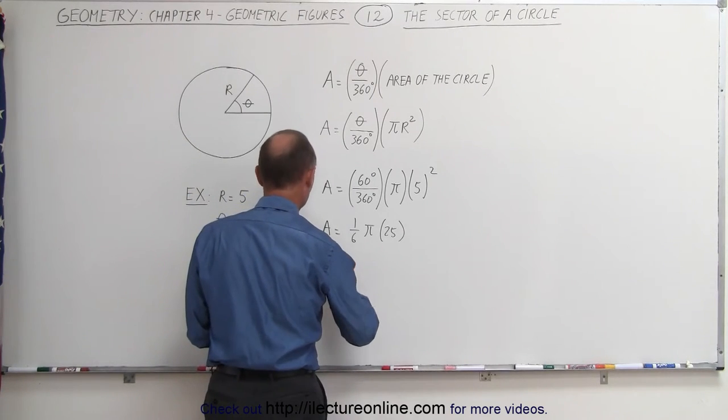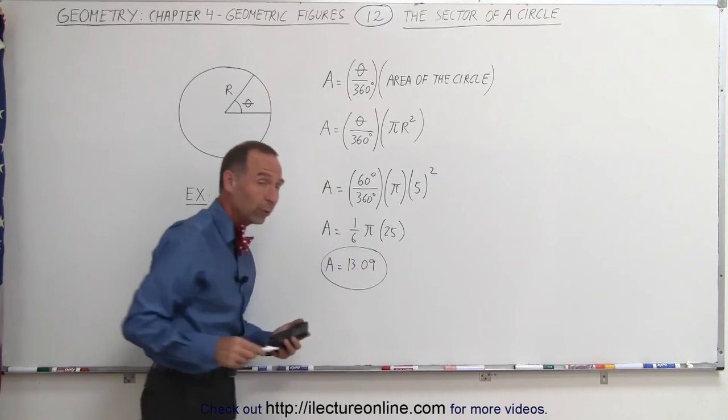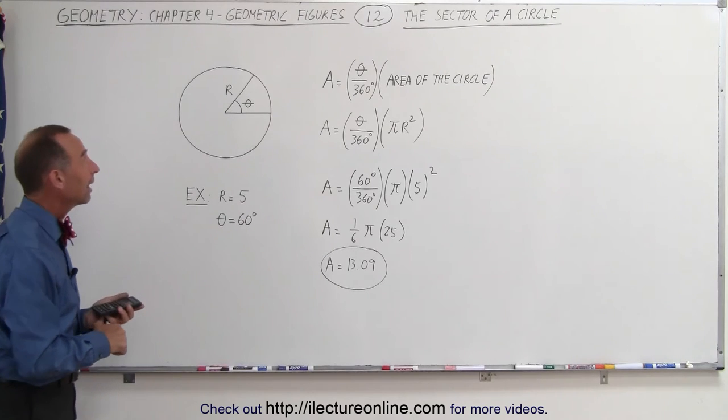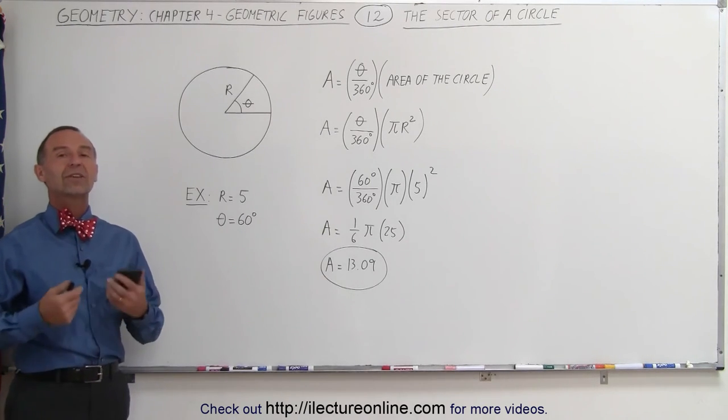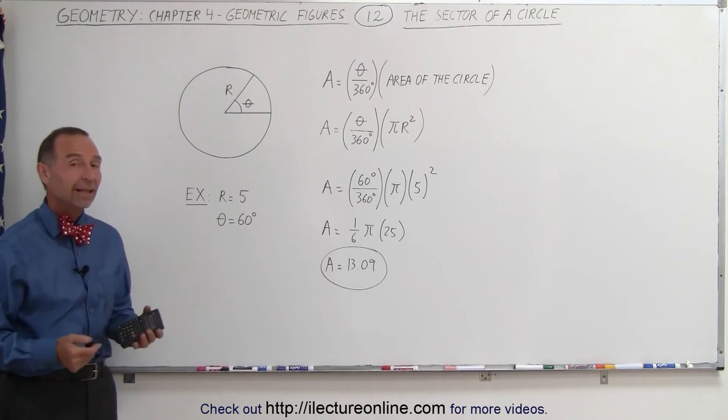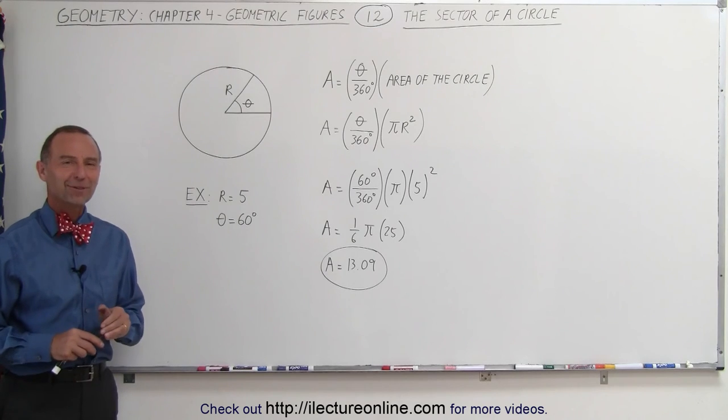Alright, so the area is equal to 13.09, and of course that's square units, whatever the units happen to be, and that's how you find the area of a sector, and that's also how a sector is defined. That's how we do that, and that's how it's done.